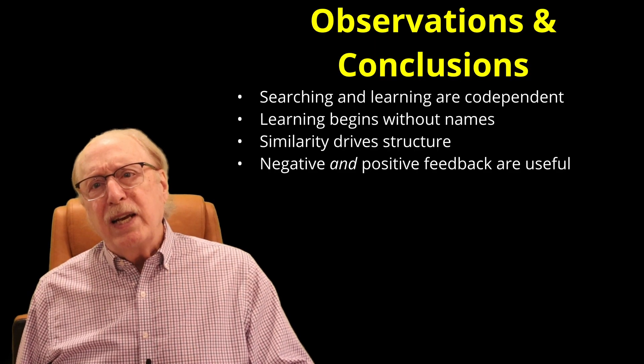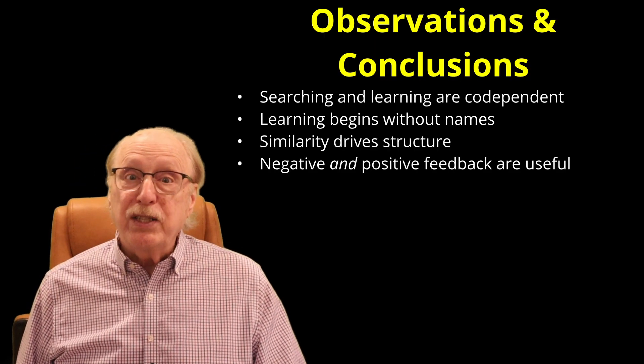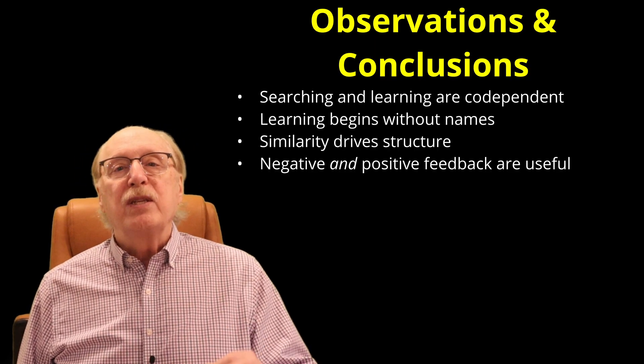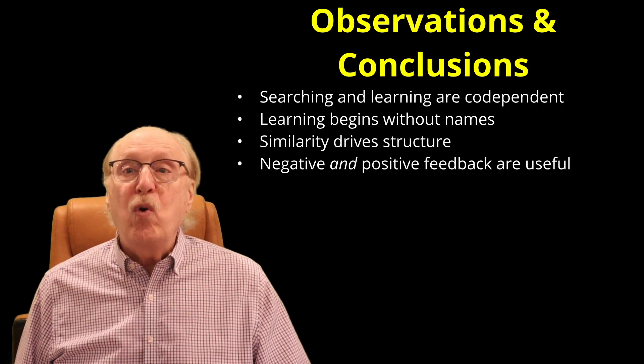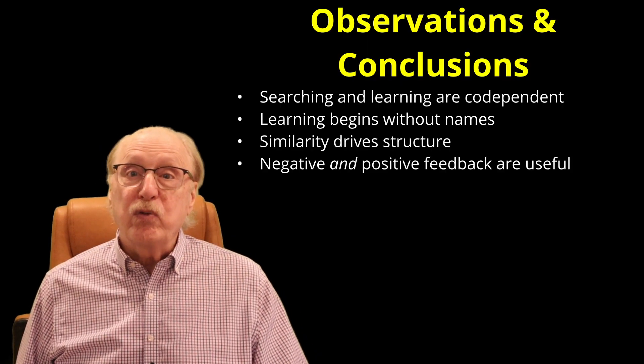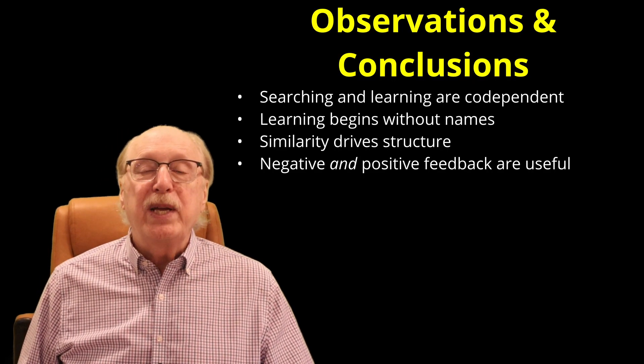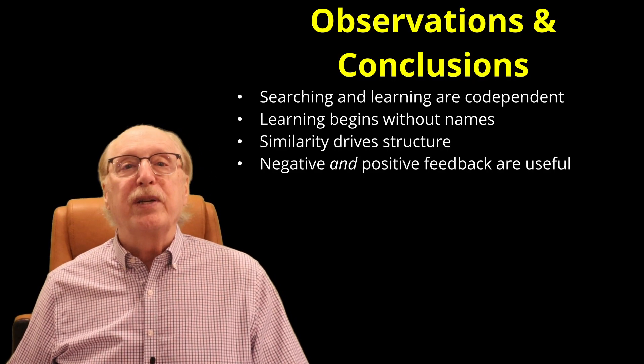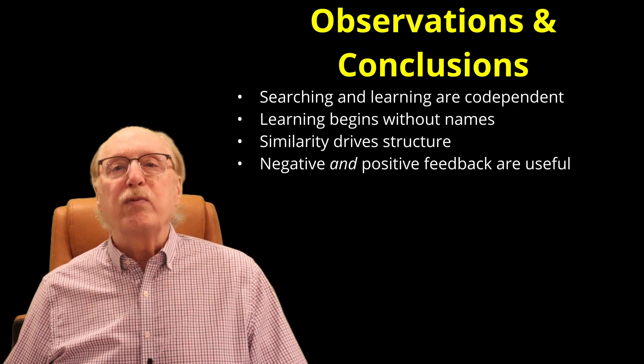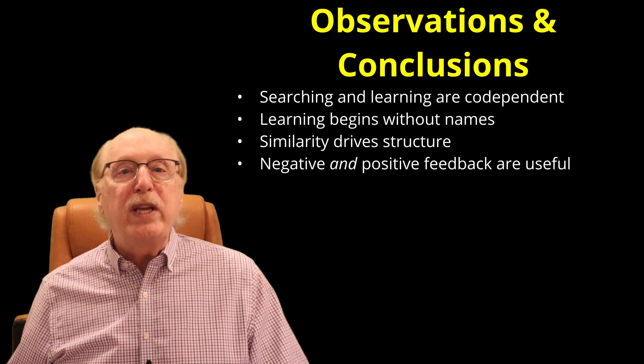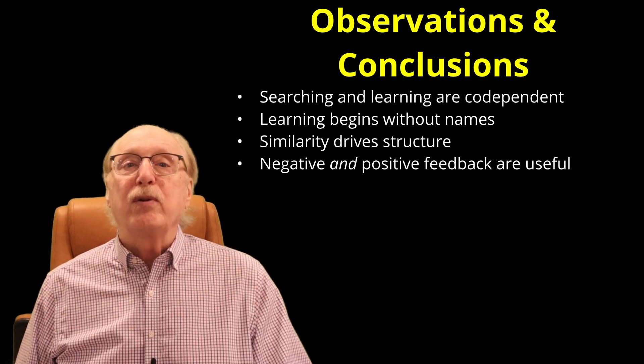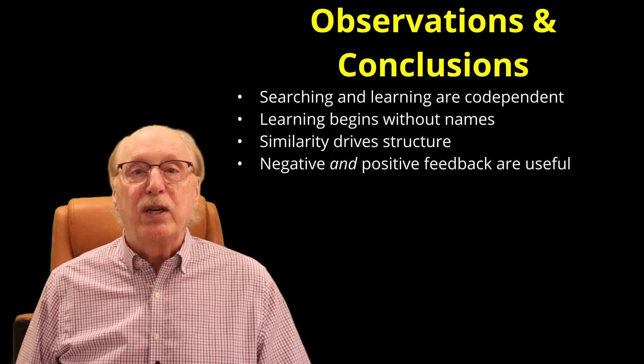Negative feedback is as informative as positive feedback. The simple directive NO caused the creation of new structure. The brain learns not by confirmation, but also by rejection. Every contradiction refines boundaries between concepts, just as every child learns to distinguish cats from dogs.